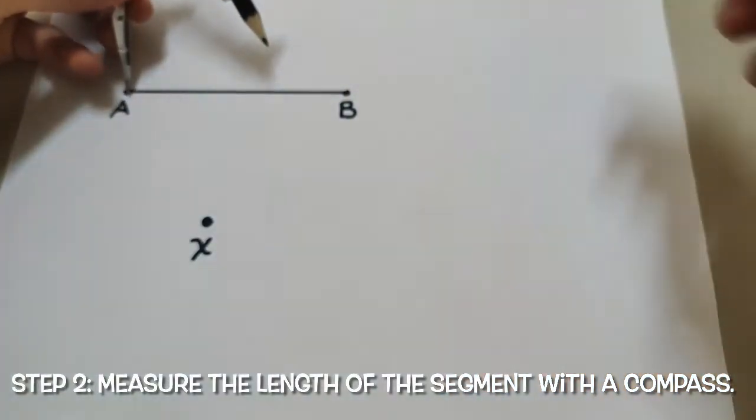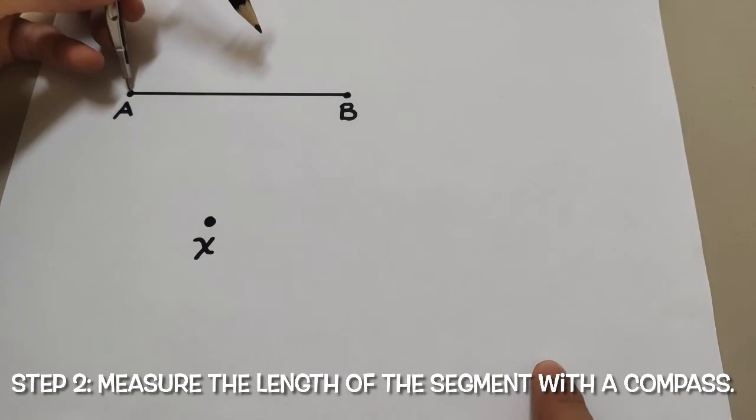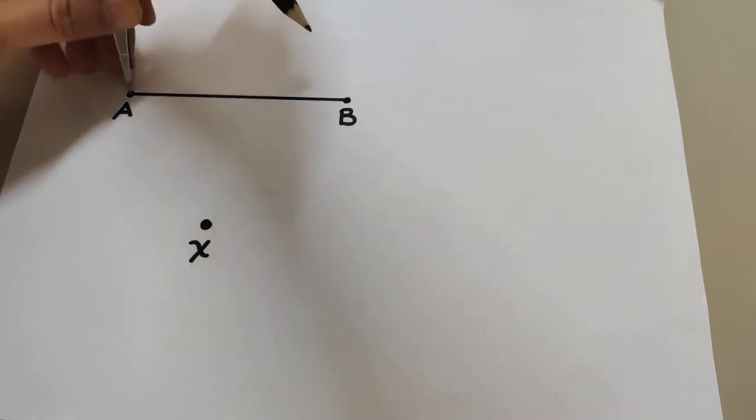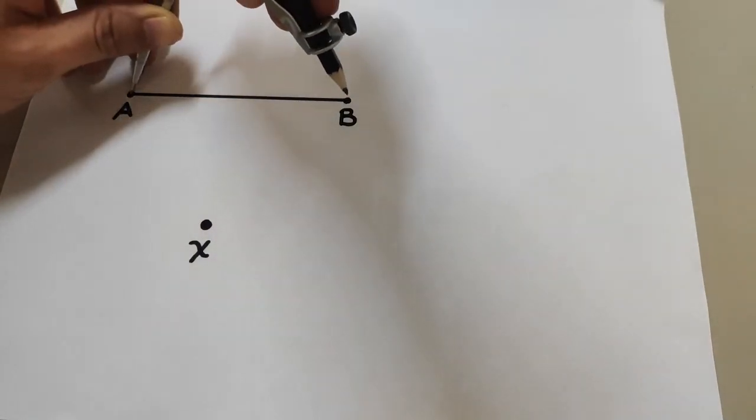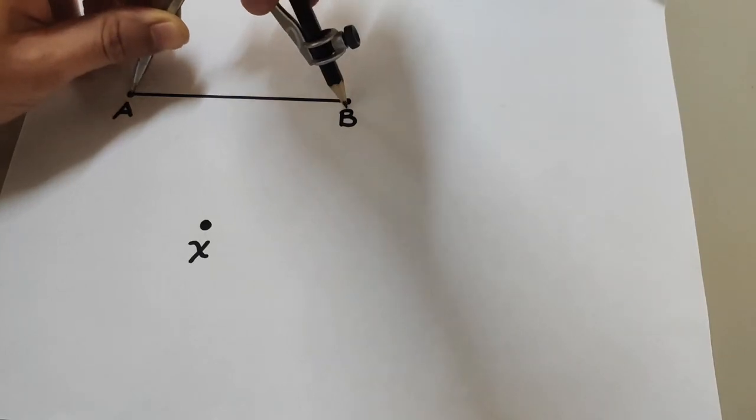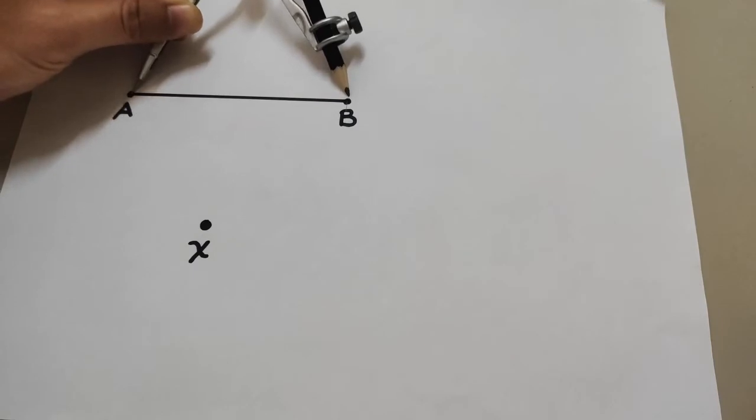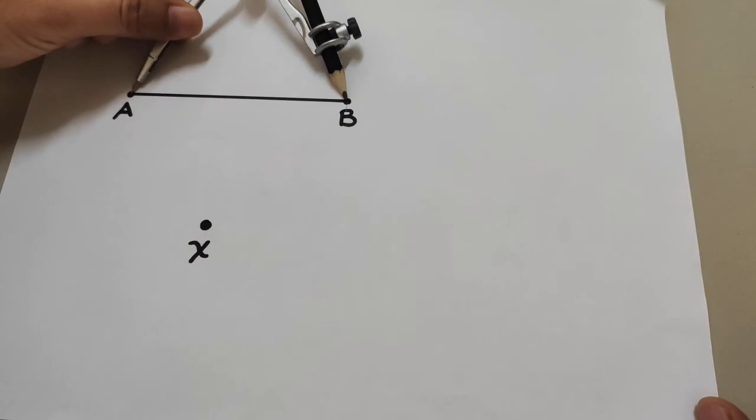Let's place the pointer on point A and move the pencil towards point B. Please make sure that both the pointer and the lead are on points A and B. Now that is the length of our segment AB.